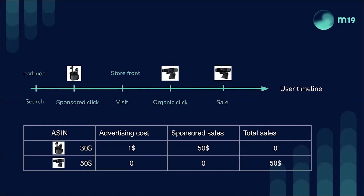The easiest way to describe it is with an example. Let's consider a user journey on the Amazon website. As a user, you go to Amazon looking for earbuds, so you type 'earbuds'. You get a bunch of different products displayed on the search result page. One of the sponsored slots can be the earbuds product shown on the slide. Let's assume the user clicks on this product that is there in a sponsored position.